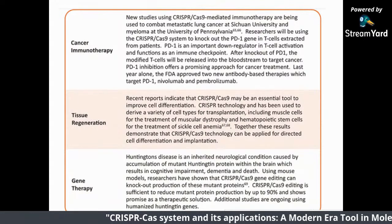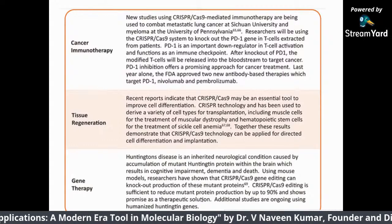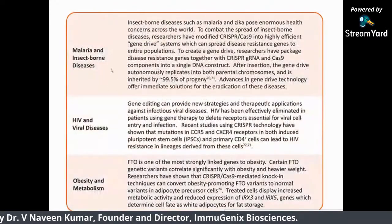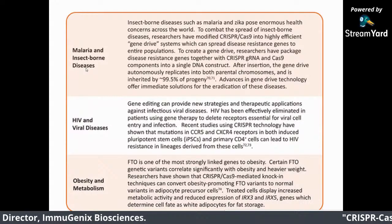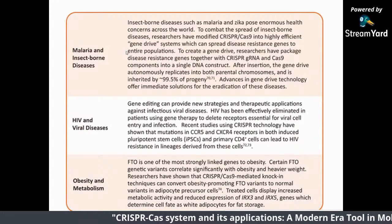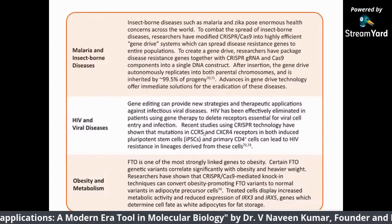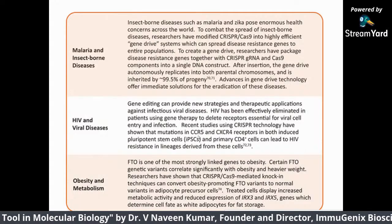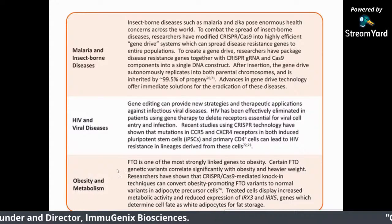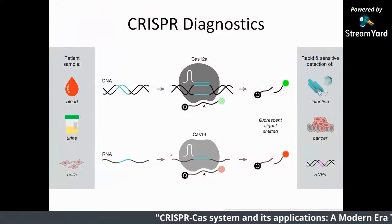In gene therapy, neurons can be modified by using CRISPR and they can become normal. Similarly, malaria and other diseases like Zika can be controlled by controlling mosquitoes — making them resistant to malaria, Zika, dengue, and so on. HIV can also be controlled by inactivating the virus by modifying the co-receptors. It has also been proven that genes responsible for obesity can be modified. The other interesting part of CRISPR is diagnostics — this is the area where we are currently working.